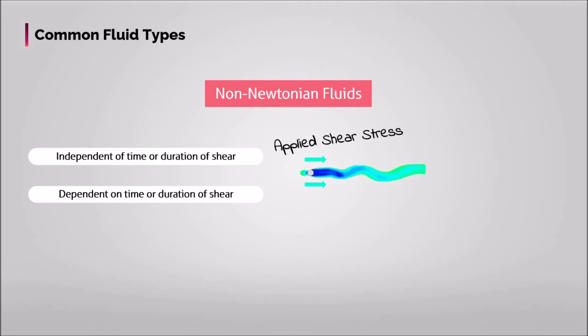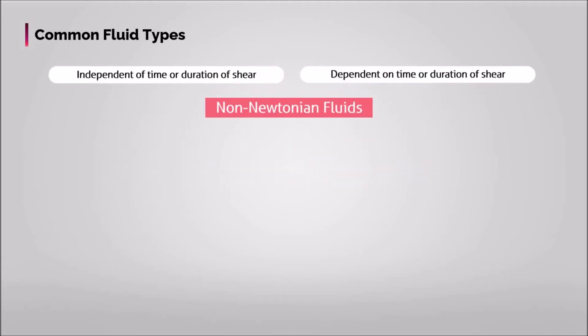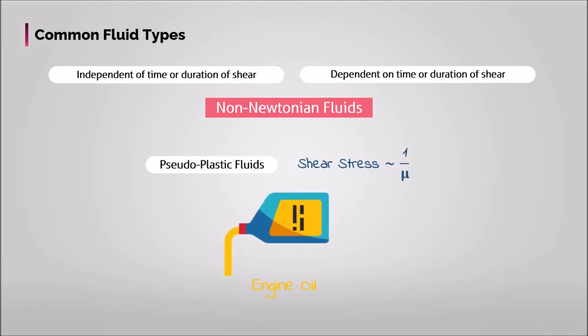Non-Newtonian fluids can be classified as pseudo-plastic fluids or shear thinning fluids. When the shear force on the fluid is increased, the apparent viscosity decreases. Engine oil is an example of this fluid type.